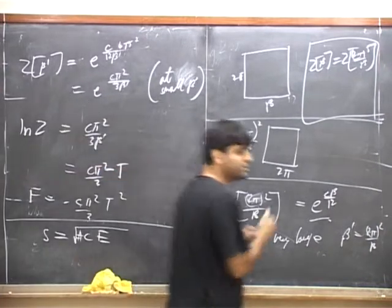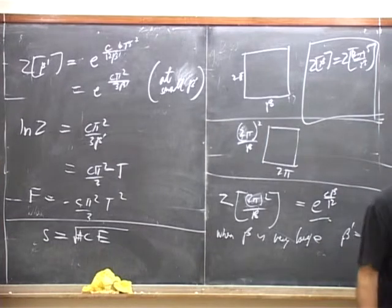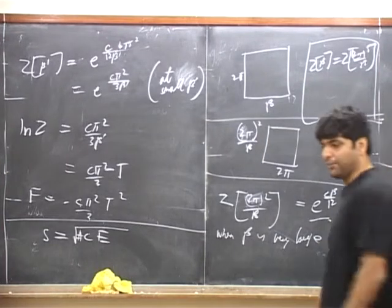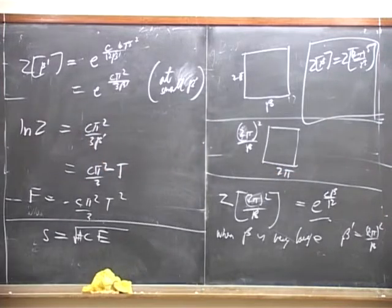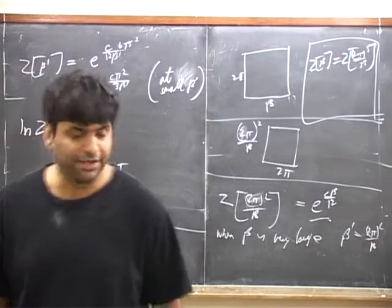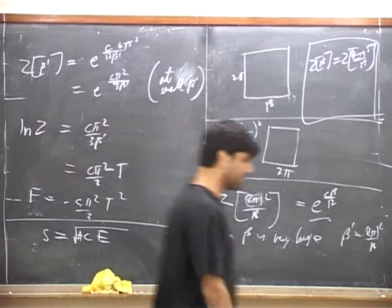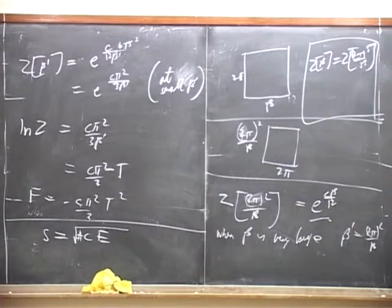So now we've got many different ways of thinking of the central charge. The central charge is the object that governs the density of states of the theory. It's the object that tells you how the partition function of the theory changes under a Weyl transformation. It's the object that tells you what the stress tensor trace is on a curved manifold. Many different roles that the central charge plays are all linked to each other in this beautiful way. Unless there are questions, that's it for the general discussion of CFT.